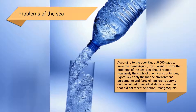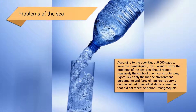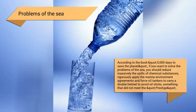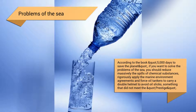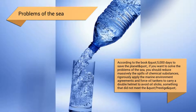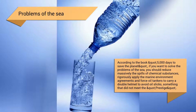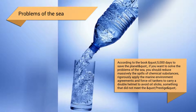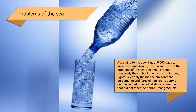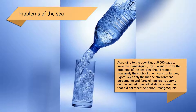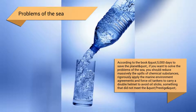According to the book '5,000 Days to Save the Planet', to solve the problems of the sea you should massively reduce the spills of chemical substances, rigorously apply marine environment agreements, and force oil tankers to carry a double hull to avoid oil slicks.